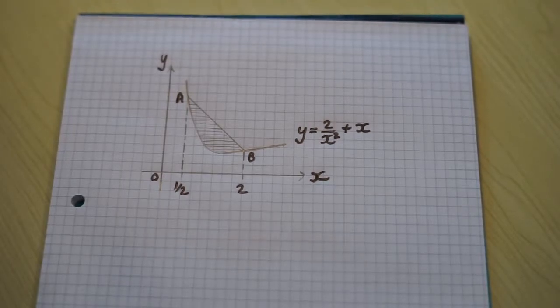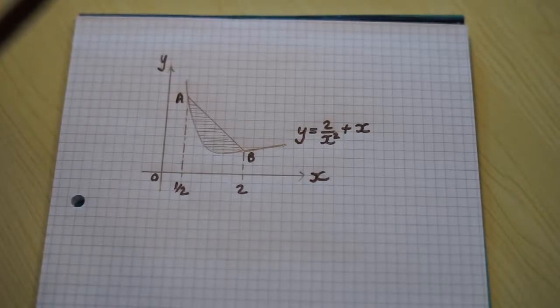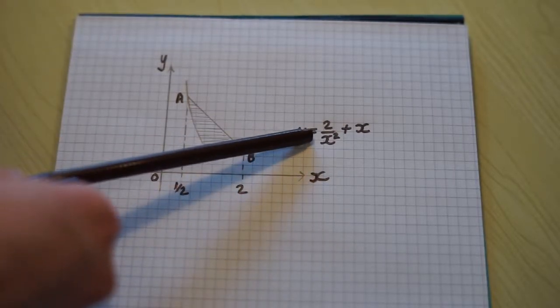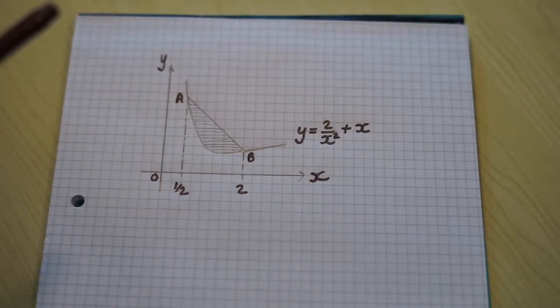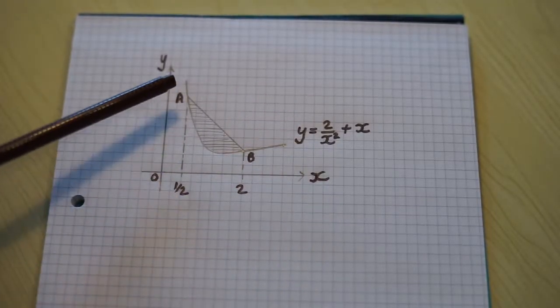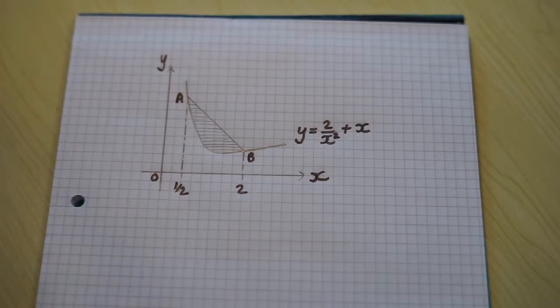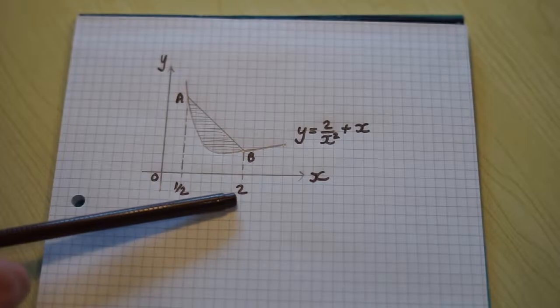In this video we're going to use integration to find an area enclosed between a curve and a line. Our curve is y = 2/(x² + x) and our line runs between two points on the curve: point A where x equals a half and point B where x equals 2.